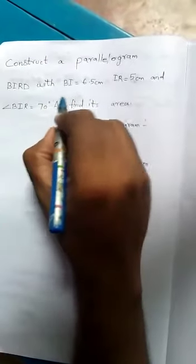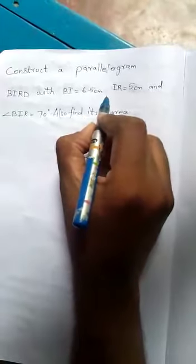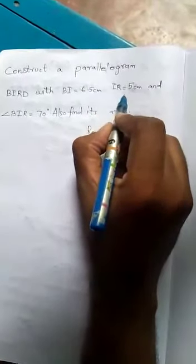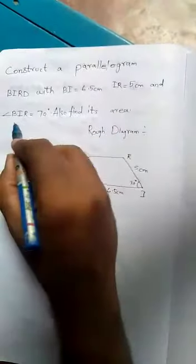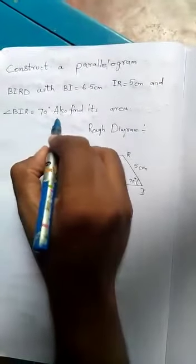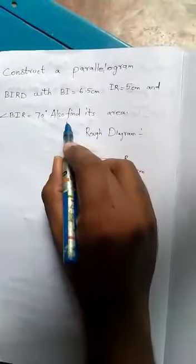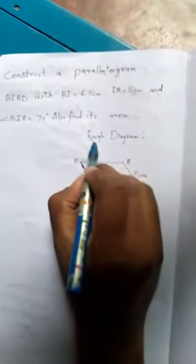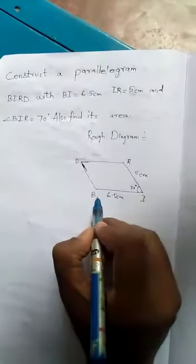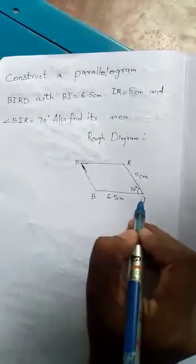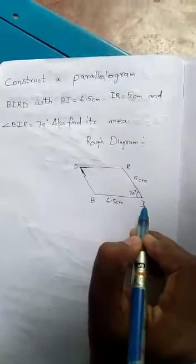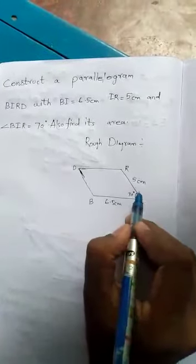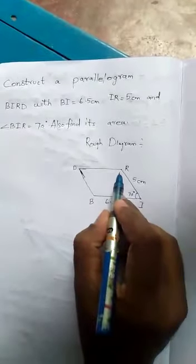Construct a parallelogram BIRD with BI equal to 6.5 cm, IR equal to 5 cm, and angle BIR equal to 70 degrees. We should find its area. First, draw the rough diagram with BI equal to 6.5 cm and IR equal to 5 cm.